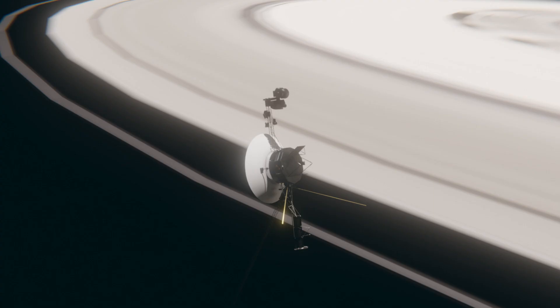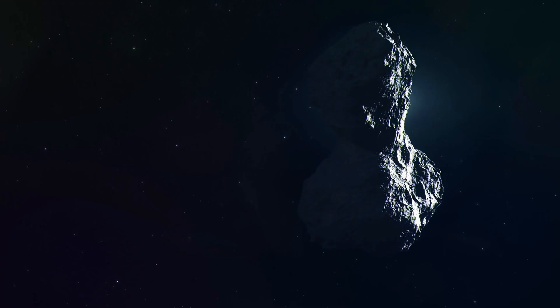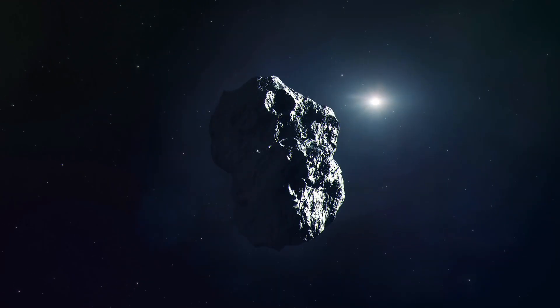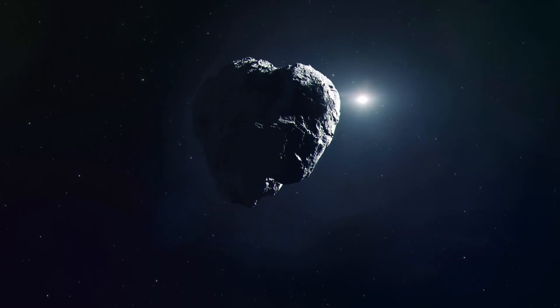Until recently, only two known visitors had ever crossed that boundary in the opposite direction, entering our solar system from the great unknown. In 2017, Oumuamua, and in 2019, 2I Borisov.